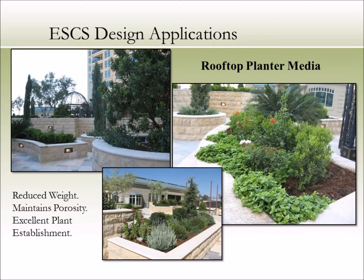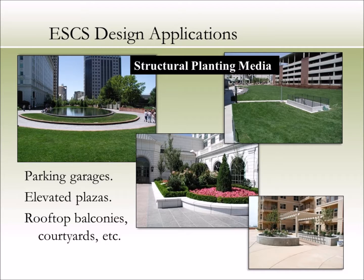Rooftop gardens often consist of rooftop planters with a wide variety of landscape plants. Soil requirements are similar to those of extensive and intensive green roofs — the soil needs to be lighter in weight, long lasting, well draining, and capable of supporting plants growing in a confined space. A lightweight planting media with ESCS will also reduce wear on the planters in extreme weather environments. Structural plantings are usually large landscape areas over a structure such as a subterranean parking garage, often receiving intense public access. ESCS can significantly reduce soil weights, allowing additional landscape elements and a broader plant palette. The soil media for structural planting is very similar to that used in rooftop planters and intensive green roofs.